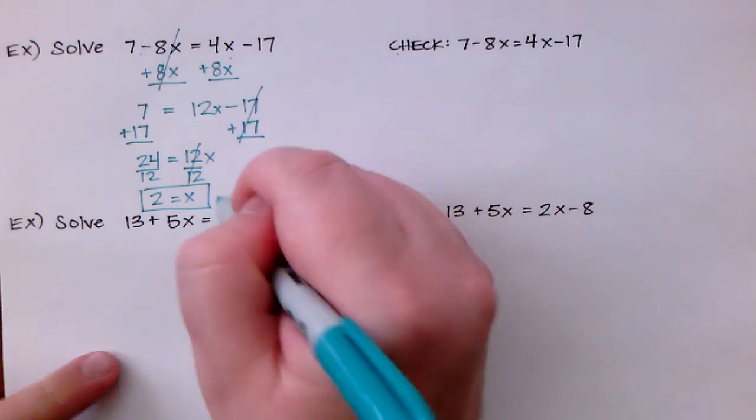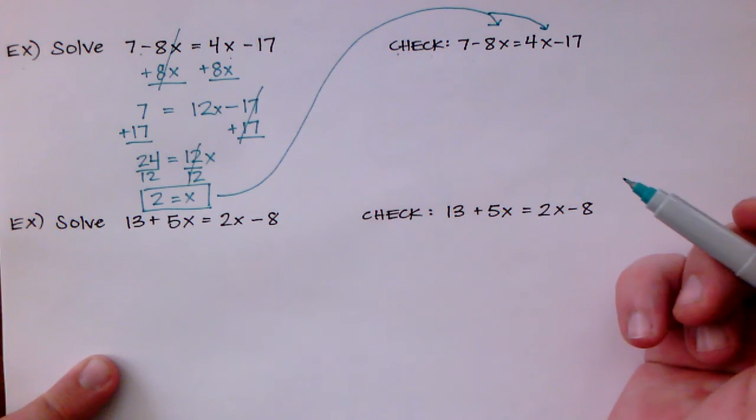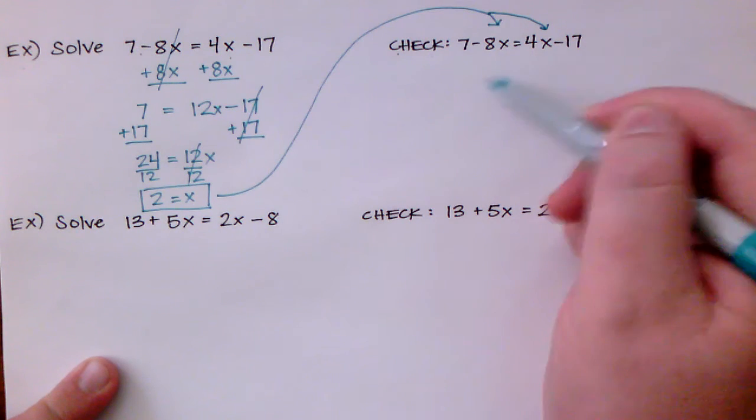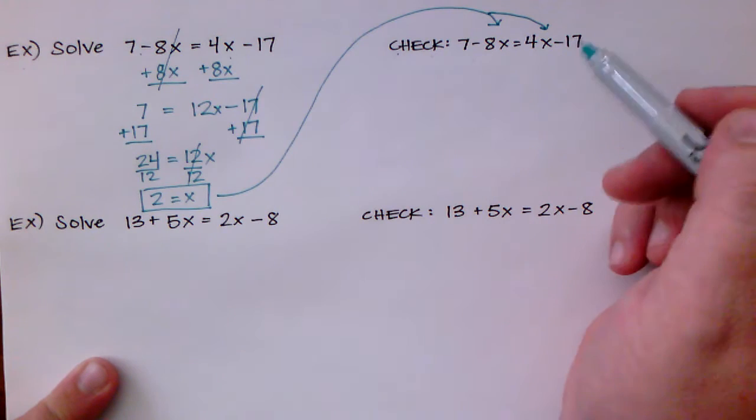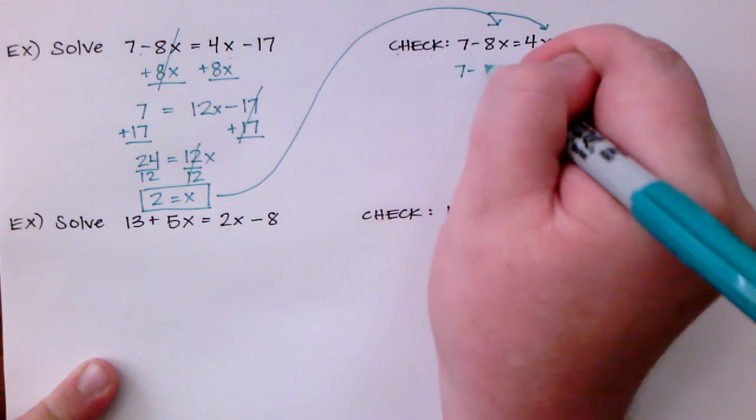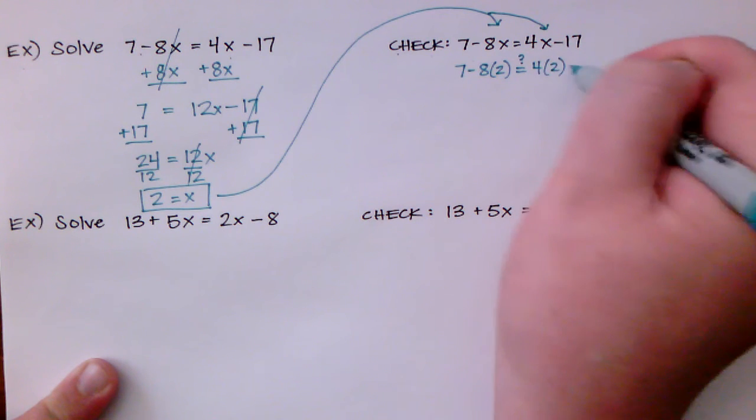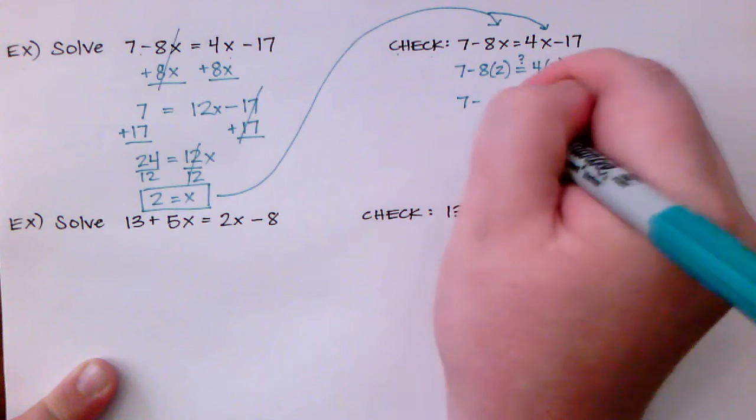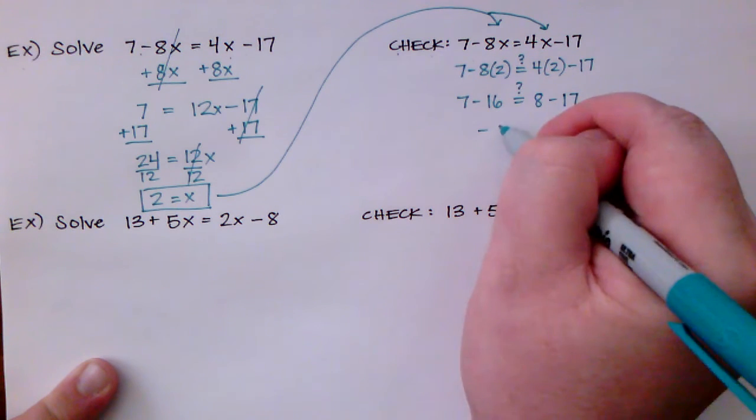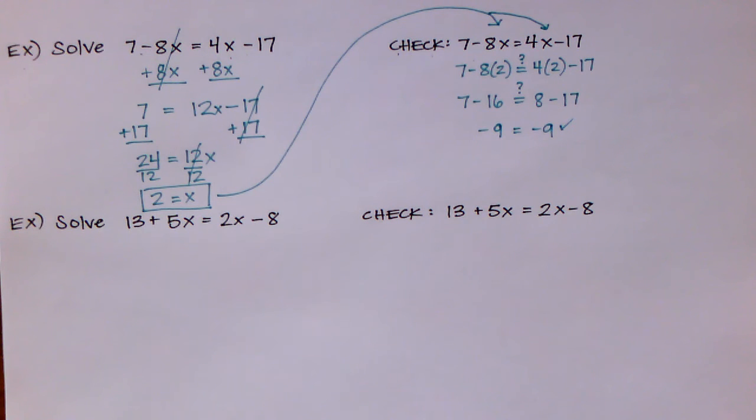So it's not too bad. Okay let's go ahead and plug it in. This time I have two places where I need to plug in my 2 just to check to make sure that I did get the equation right. And when I'm working this out I just want to see if the left-hand side equals the right side. Never when you're checking are you going to move stuff to either side of the equal sign. So 7 minus 8 times 2, is that equal to 4 times 2 minus 17? This is 7 minus 16, is that equal to 8 minus 17? Well this left-hand side is negative 9 and the right-hand side is negative 9. So it looks like I found the right solution.